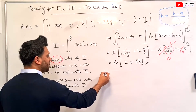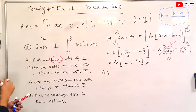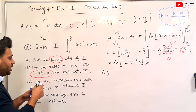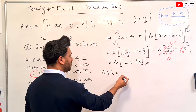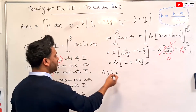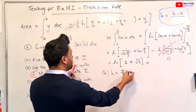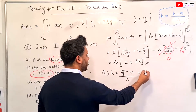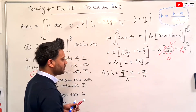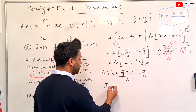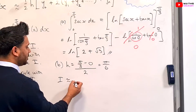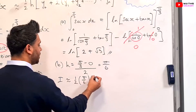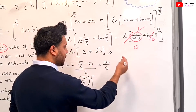Now for part b, we're asked to estimate using two strips. If you have two strips, we can work out the height of each strip. The height would be equal to pi by 3 minus 0, divided by 2. That gives you pi by 6. So we can go straight into working out the area: I is approximately equal to a half times h, which is pi by 6, times by the y values.